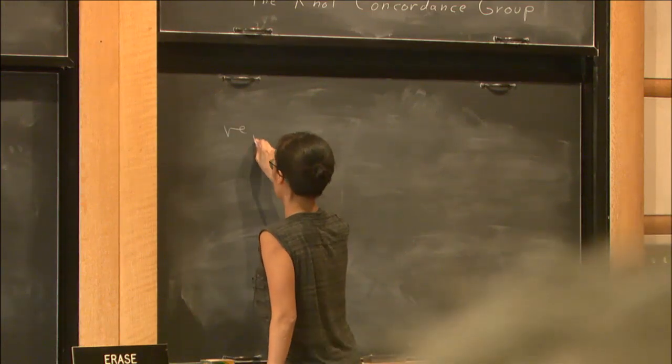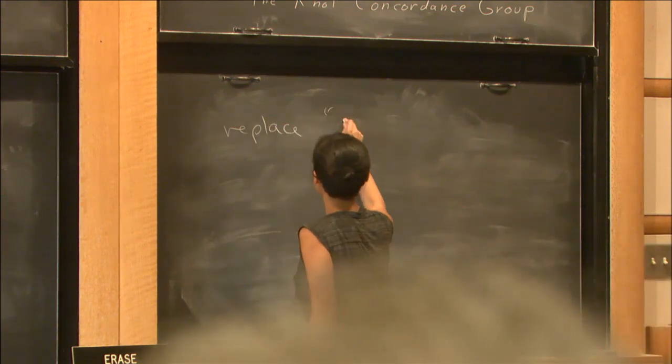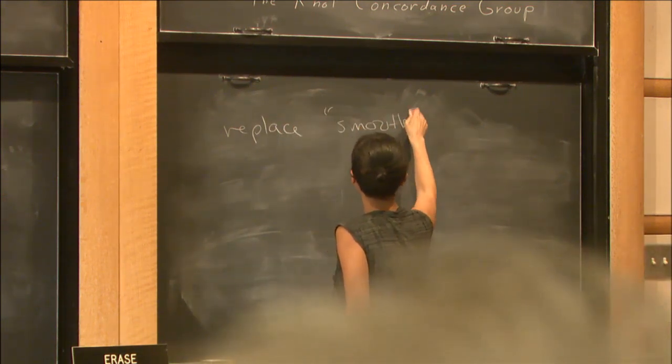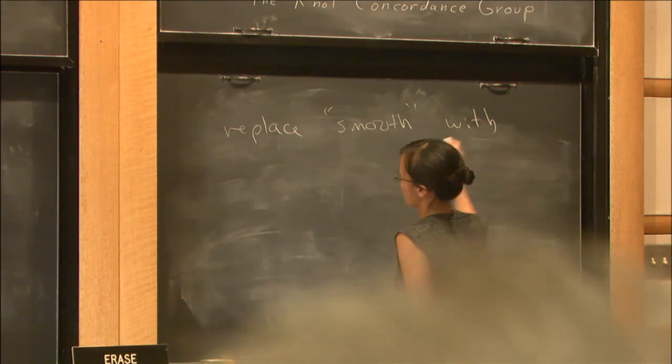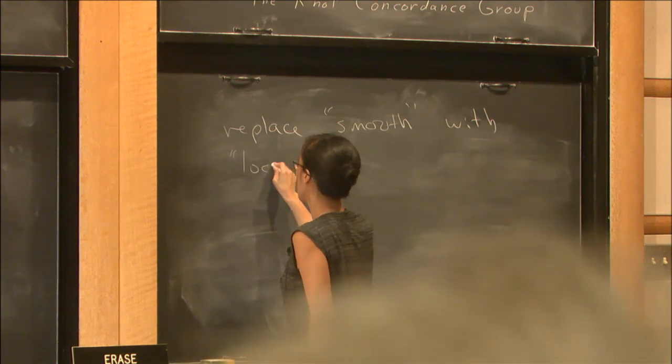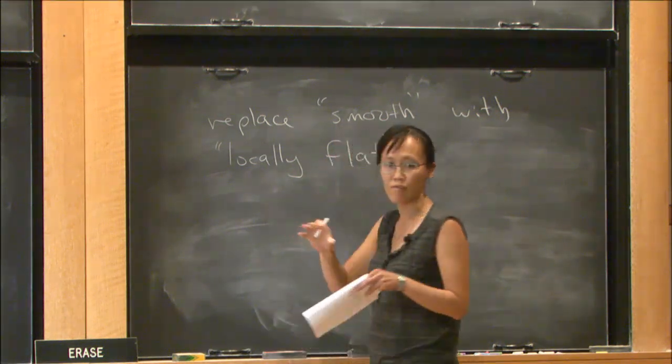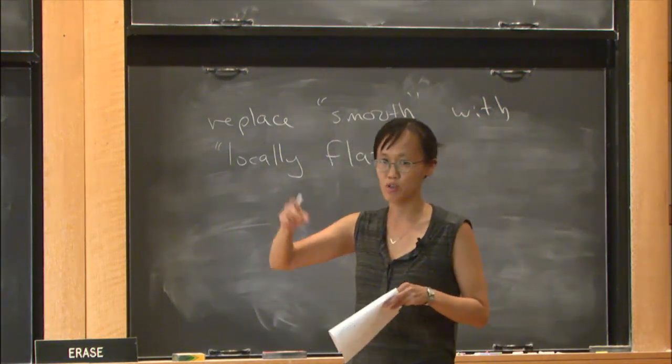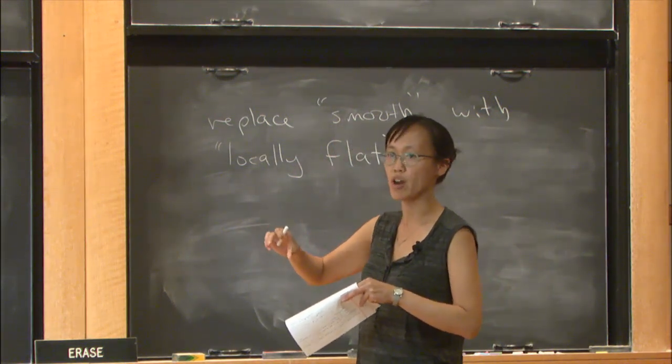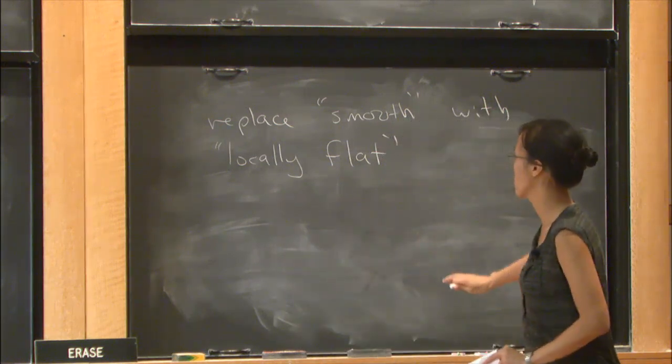But it turns out there's still a weaker notion of concordance, and that occurs if you replace 'smooth' with 'locally flat.' Locally flat means that your cylinder has to have a product neighborhood. The cone point doesn't have a product neighborhood, so you sort of got rid of that problem.